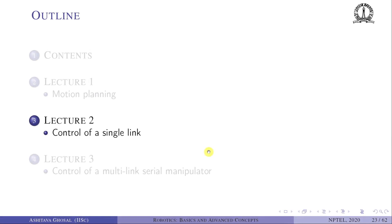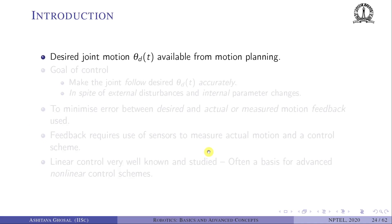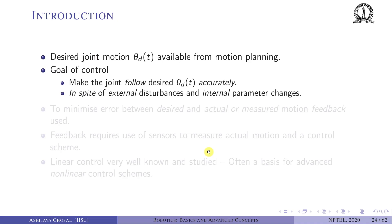Welcome to these NPTEL lectures on robotics, basic and advanced concepts. In this lecture we will look at control of a single link. We know the desired trajectory of the single link — theta d of t — generated in a smooth and continuous manner using a C2 trajectory and cubic polynomials. The goal of control is to make the joint follow the desired trajectory accurately, in spite of external disturbances and internal parameter changes.